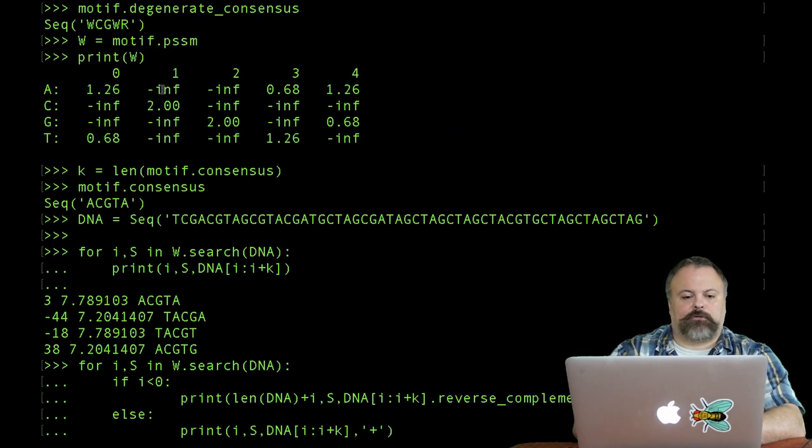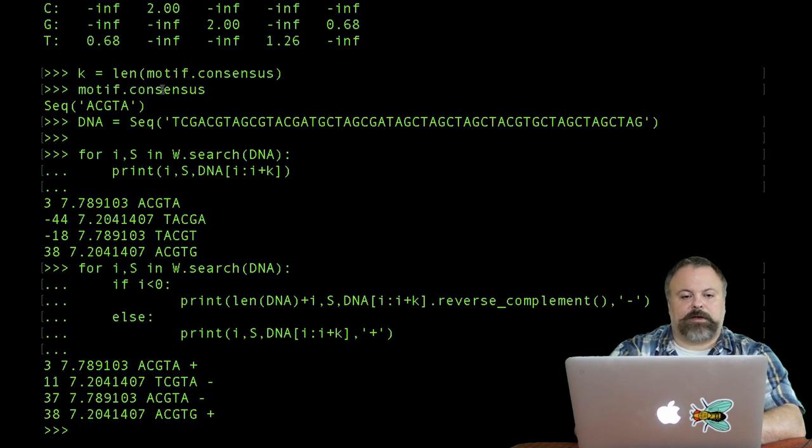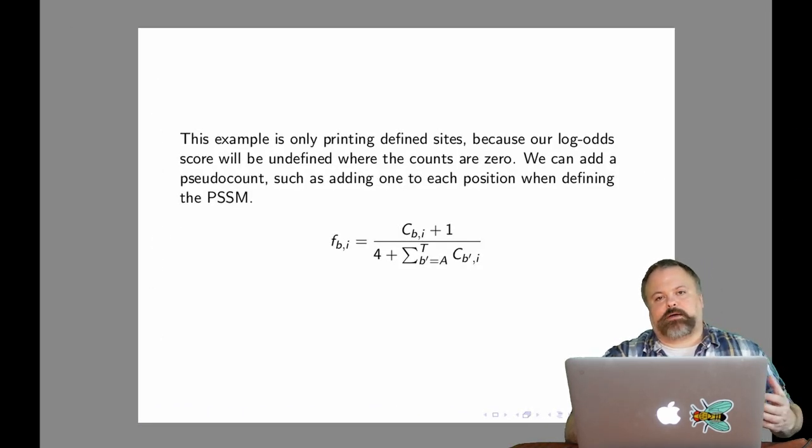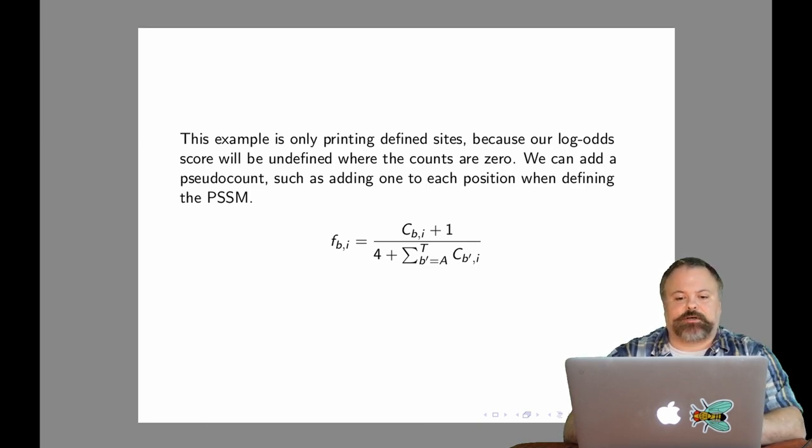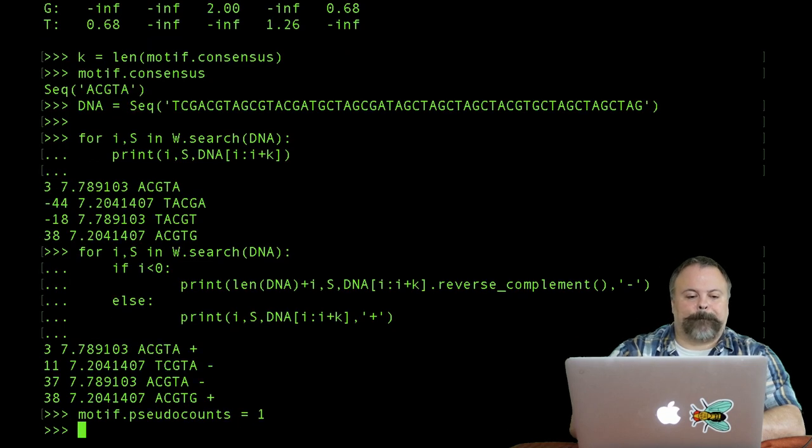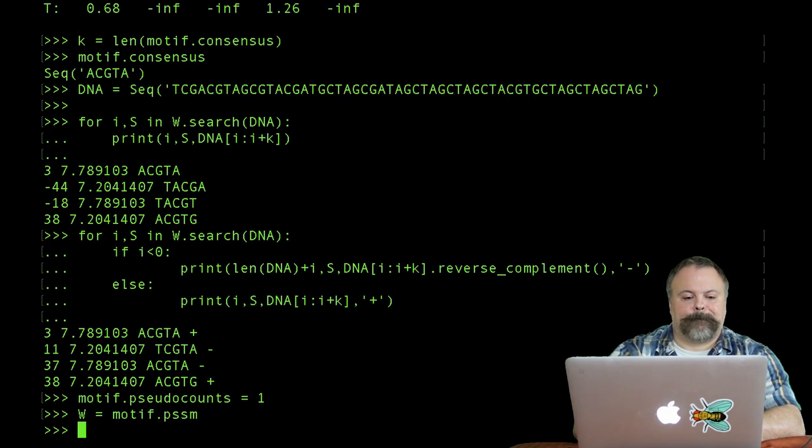Now the other thing is, as I showed you before, there's negative infinities here, so we can actually correct that by defining a pseudocount. An example of a pseudocount could be like adding 1 to each position when we're defining our frequency matrix. This would then be used to define our weight matrix. Adding 1 to each term would be the simplest choice. But there are other more sophisticated choices that we could talk about some other time. To do the example of 1, I could say motif.pseudocounts equals 1, and then redefine my PSSM. Now do this exact same loop again.